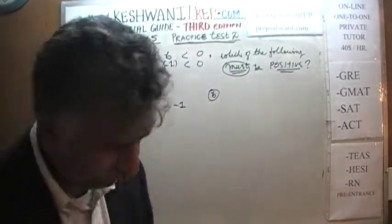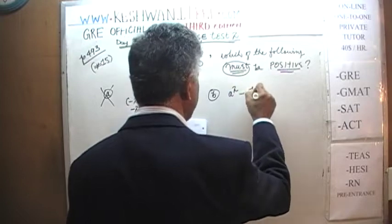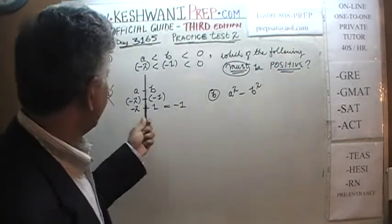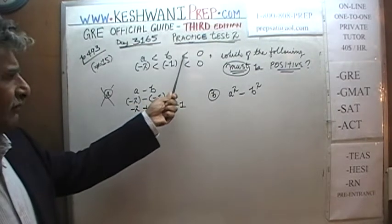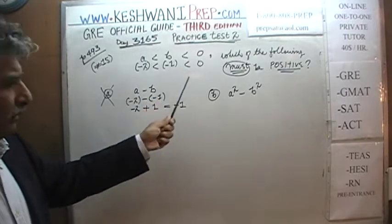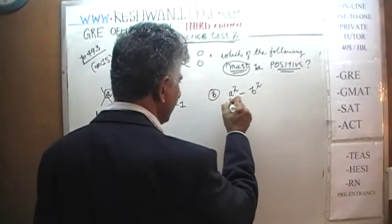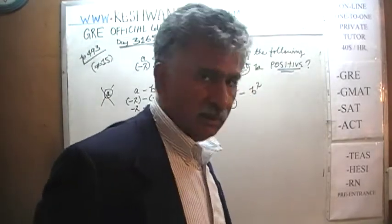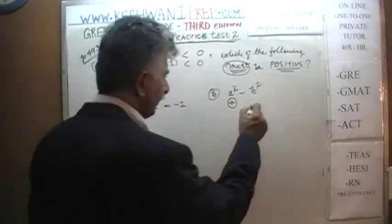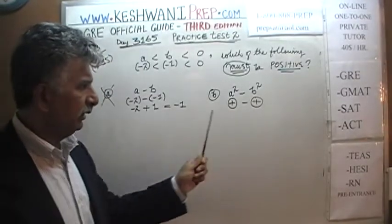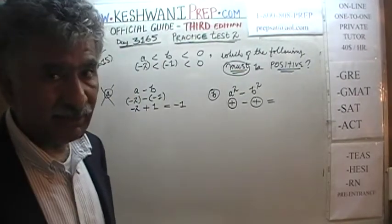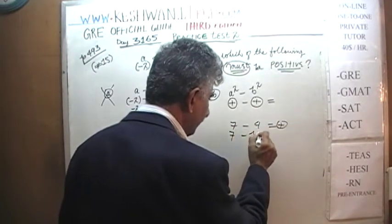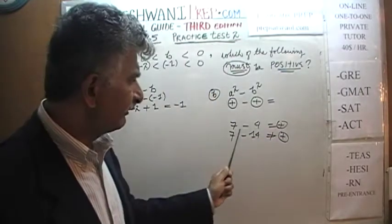Answer choice B says A squared minus B squared. Theoretically, A is negative so A squared is always positive; B is negative so B squared is always positive. However, a positive quantity minus another positive quantity is not necessarily positive — for example, 7 minus 14 is not positive. The difference is only positive if A squared is greater than B squared.